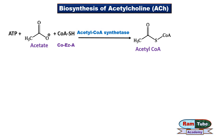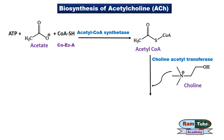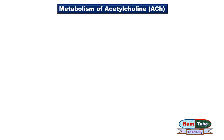In the next step, acetyl-CoA combines with choline in the presence of the enzyme choline acetyltransferase and forms the neurotransmitter acetylcholine. Since the acetyl group is transferred onto choline during the reaction, the enzyme is named choline acetyltransferase.